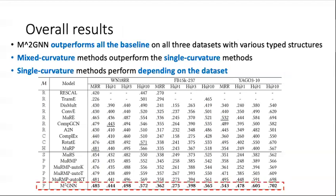Here is the overall result. M²GNN outperforms all the baselines on all three datasets with various types of structure. And the mixed-curvature method outperforms the single curvature method. And also the single curvature method performs differently depending on the datasets.